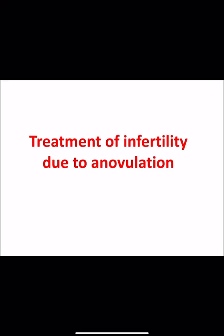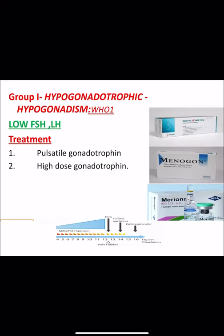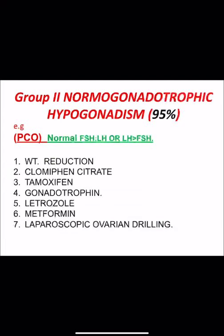If the patient is proven anovulatory, treatment of infertility due to anovulation is as follows. For Group 1, hypogonadotrophic hypogonadism with low FSH and LH, we give exogenous FSH and LH — either by pulsatile gonadotrophin or high-dose gonadotrophin given on a daily injection basis — until a follicle size of 18 to 25 millimeters is reached.